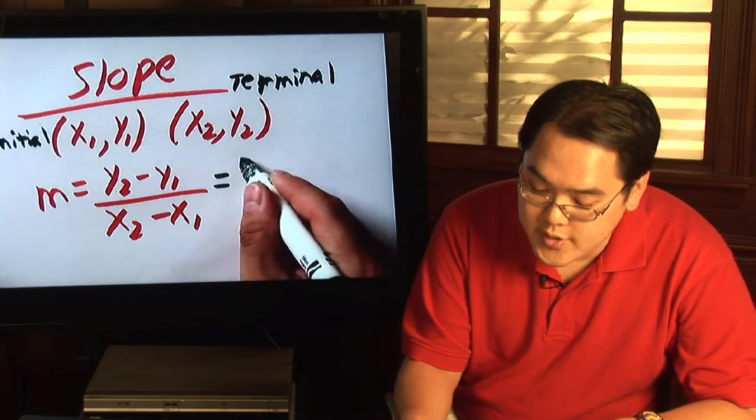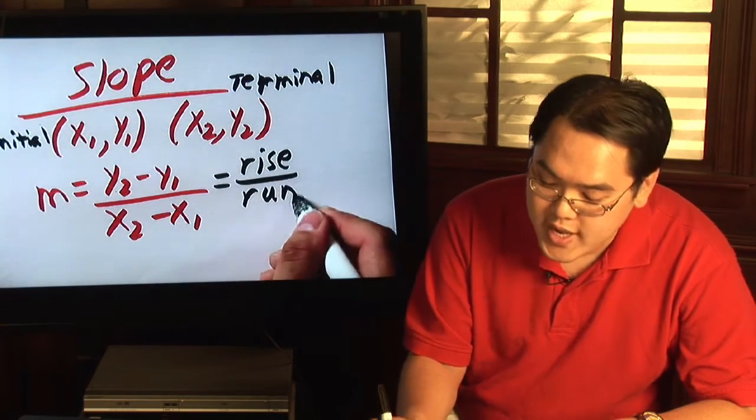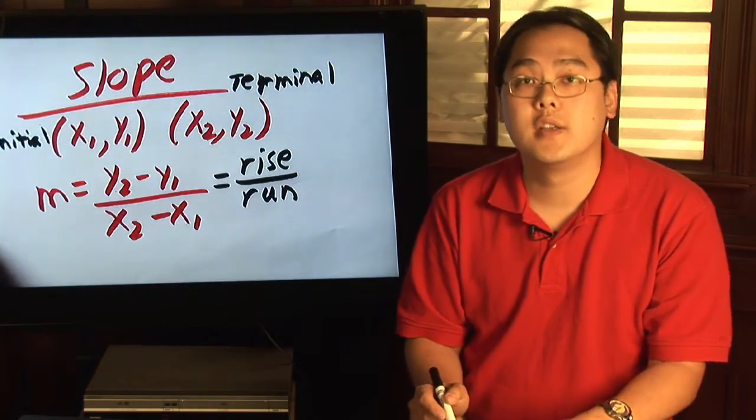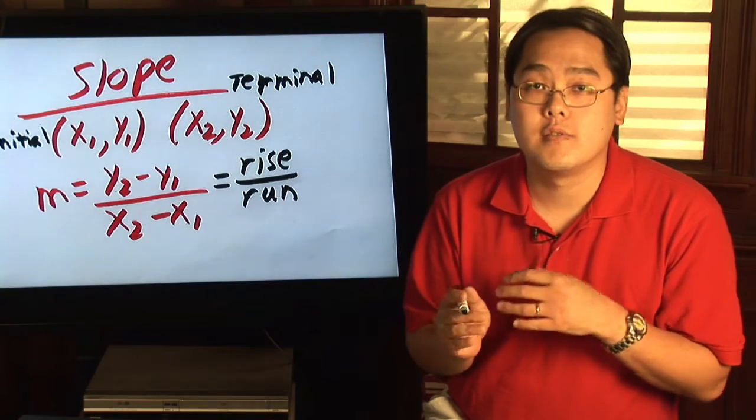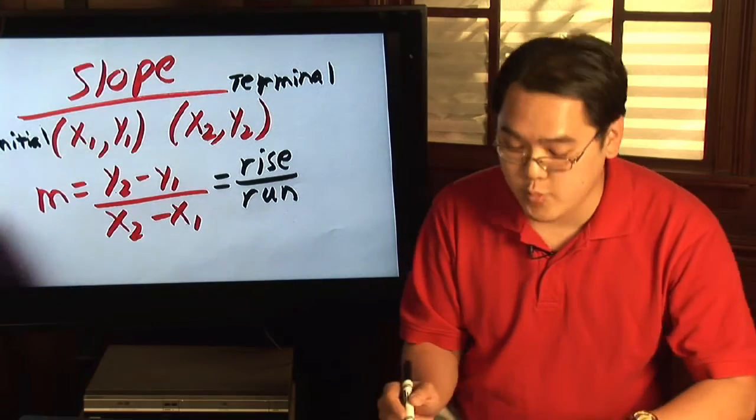What this gives you is a ratio known as rise over run. Rise is the vertical motion. Run refers to the horizontal motion. So here's the case on point.